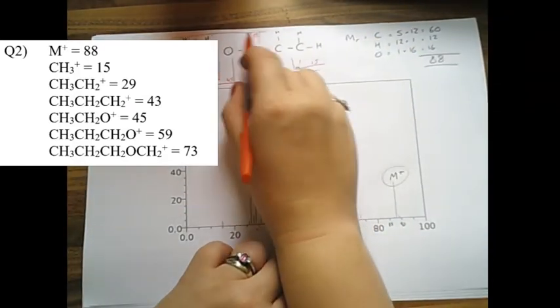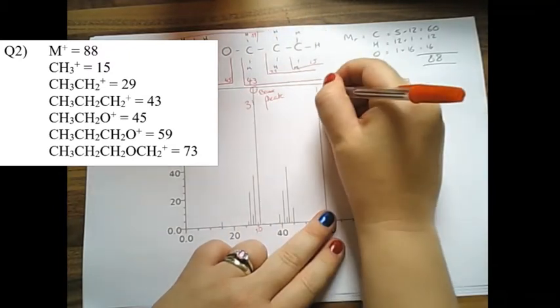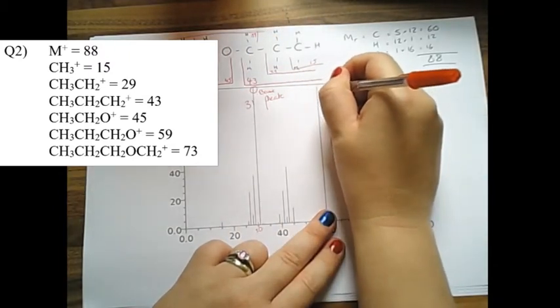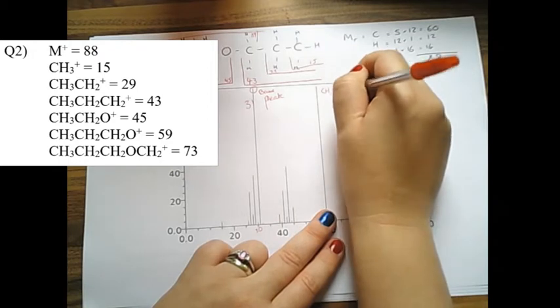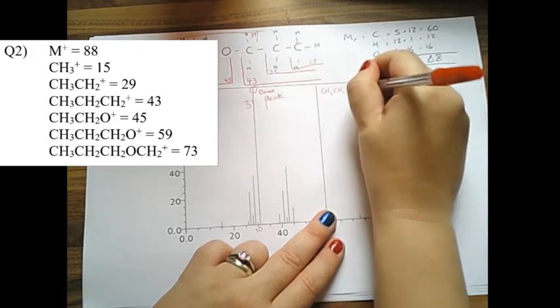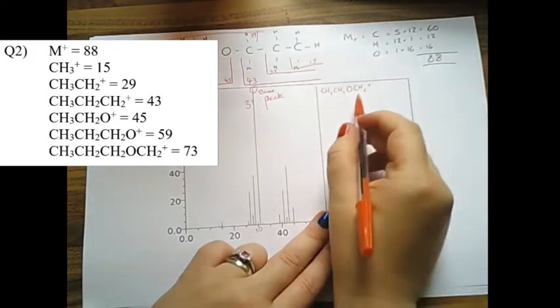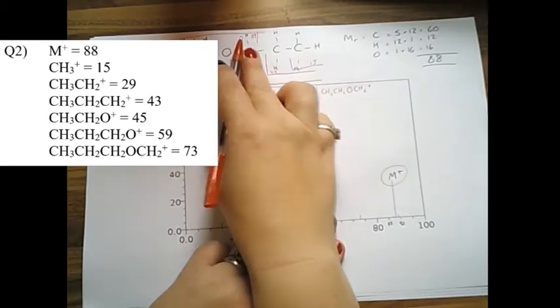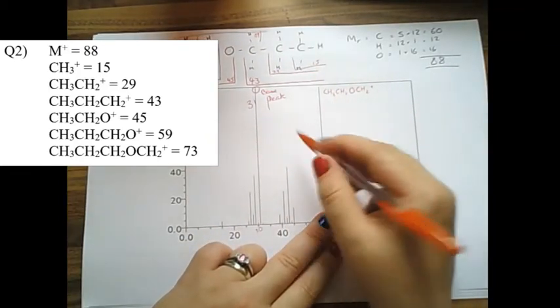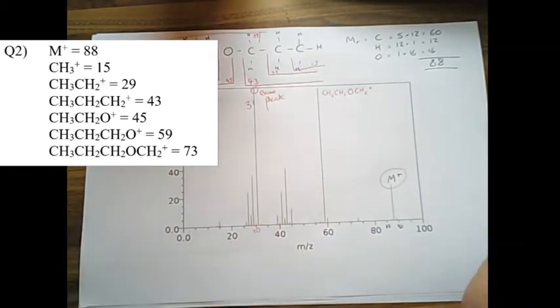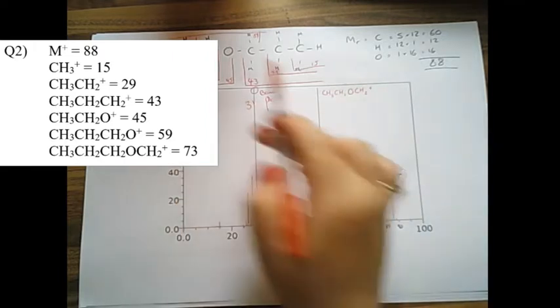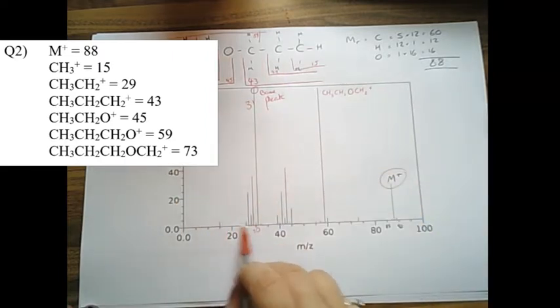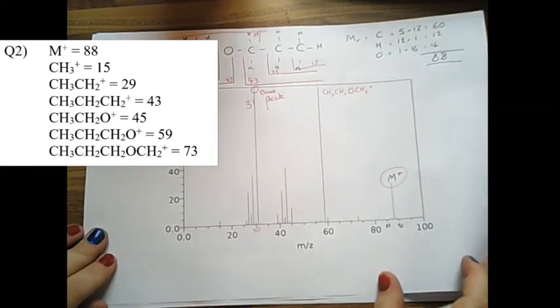There we go. 59. That's this section here. So what would that be? CH3, CH2O, CH2+, so that section matches to that entire bit there. Yeah, cool. It is what it is. Very nice. All the other numbers that we've got are there somewhere. Yeah, looks lovely. Next.